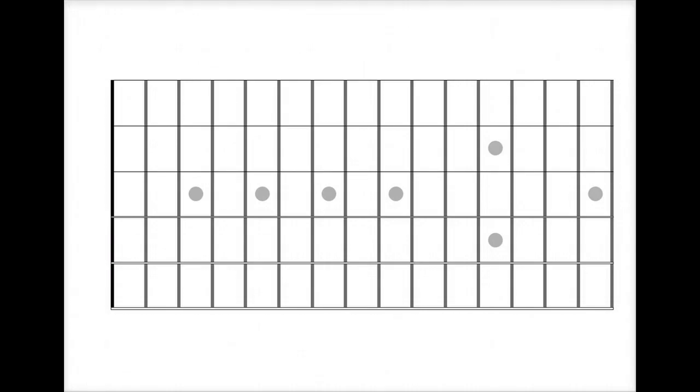Today we're looking at B dominant 7, sometimes known as the B7 chord, also sometimes known as the B major minor 7 chord. Let's talk about that.